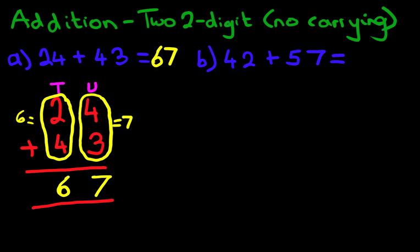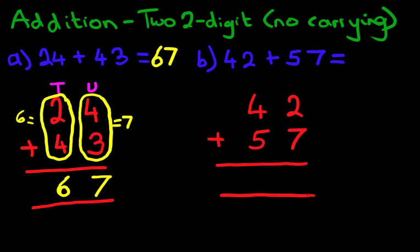42 plus 57. Again, the first step is to write this down in columns. So let's do that. We got 42 plus 57. Let me put the equal sign at the bottom. Now we can label the columns. We're not going to in this instance.